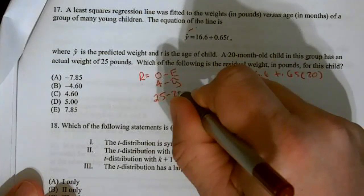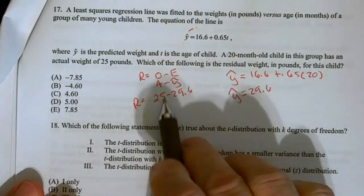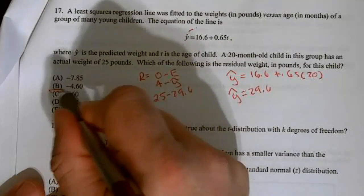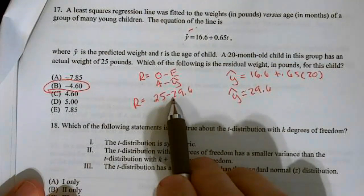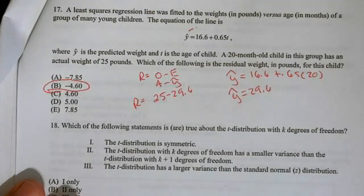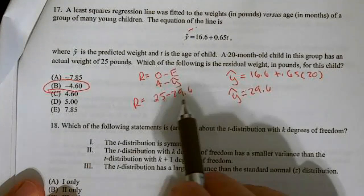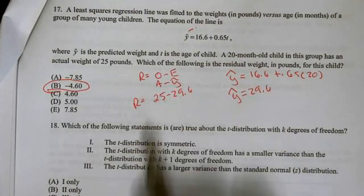So, y hat equals 29.6. So, 25 minus 29.6. So, basically, we have a negative residual of negative 4.6. This child is weighing 4.6 pounds less than was expected. If the residual had been zero, they weighed what's expected. If it's positive, the child weighs more than expected. But in this case, we weigh 4.6 pounds less than expected.